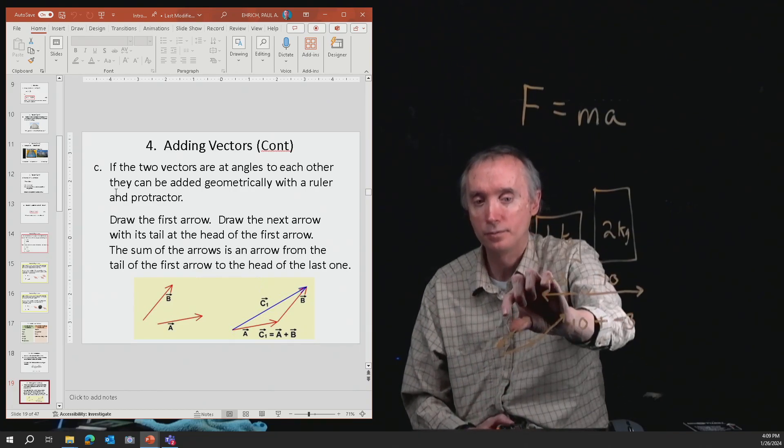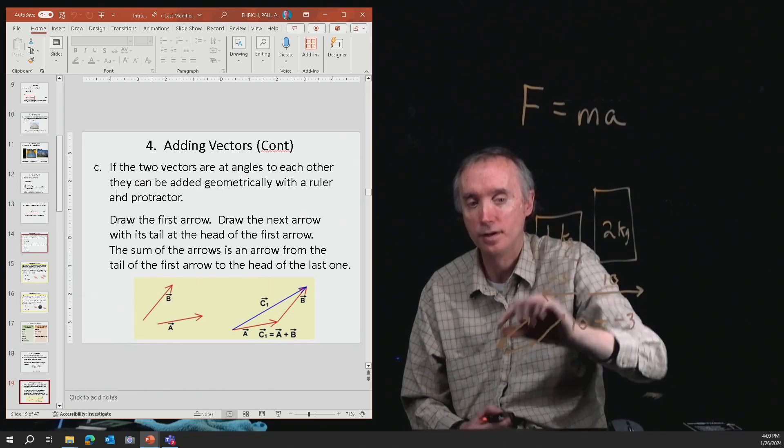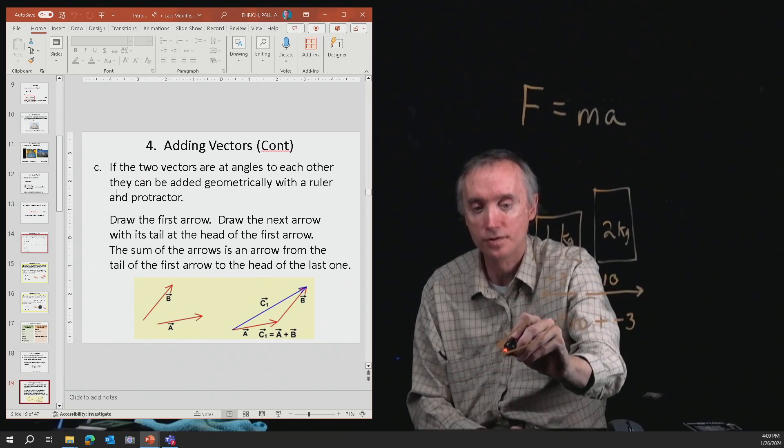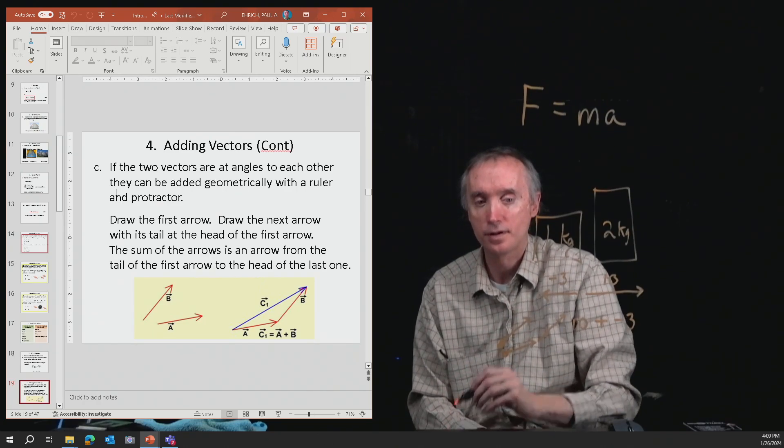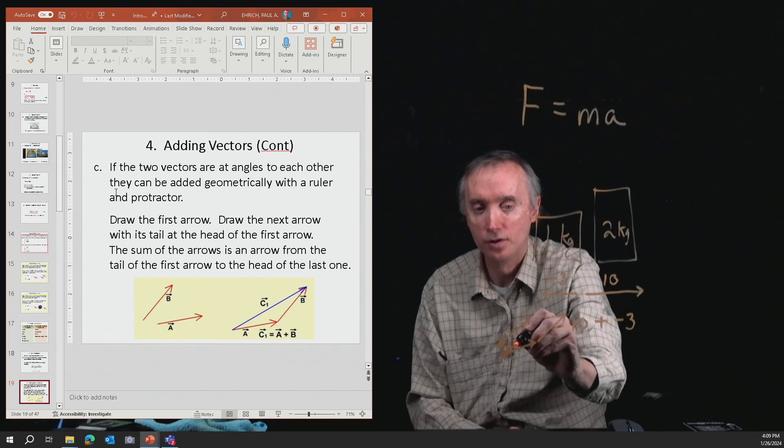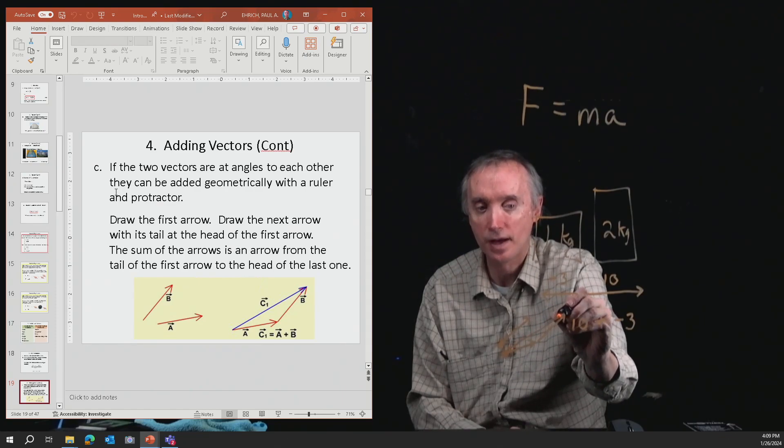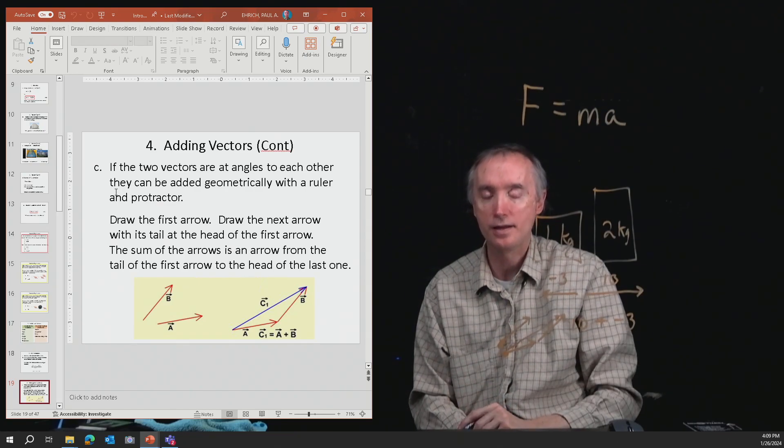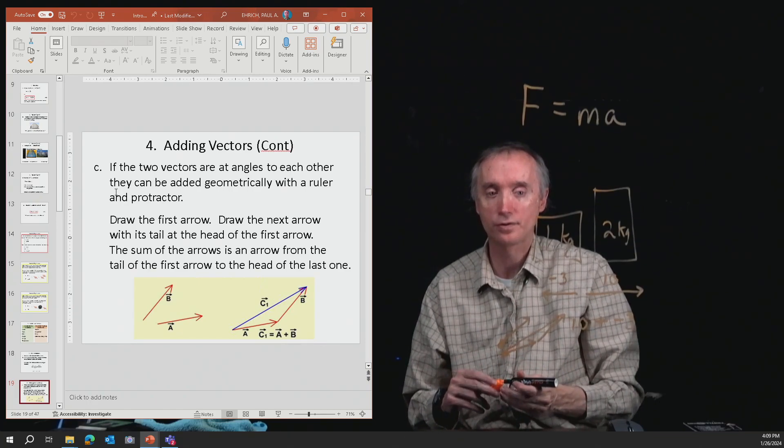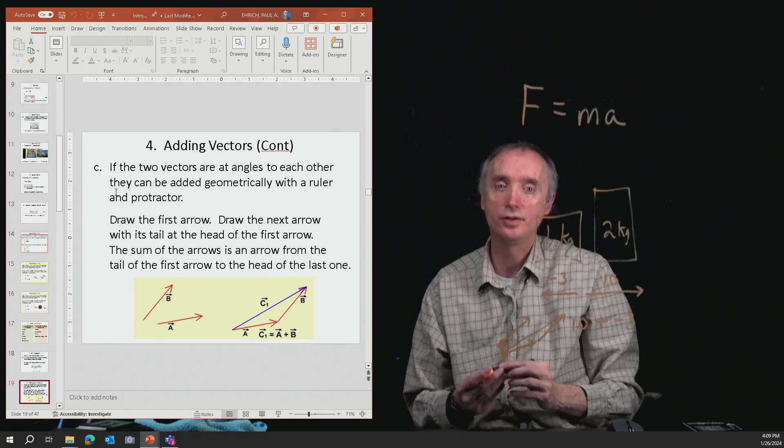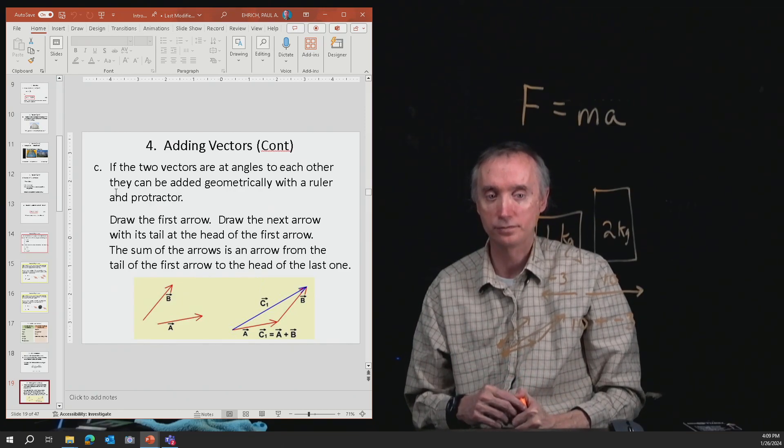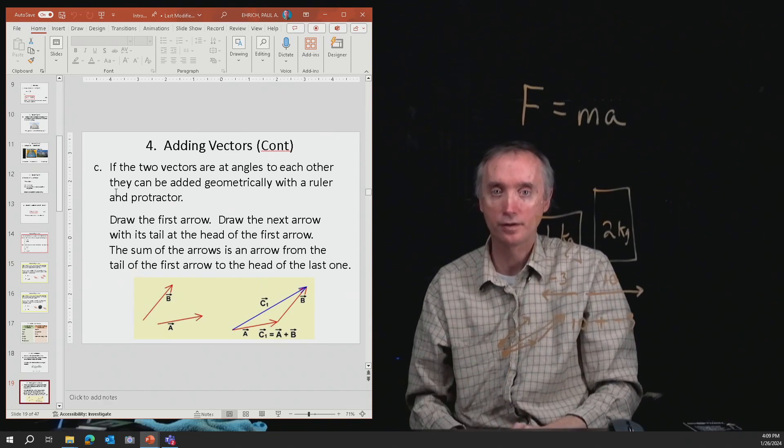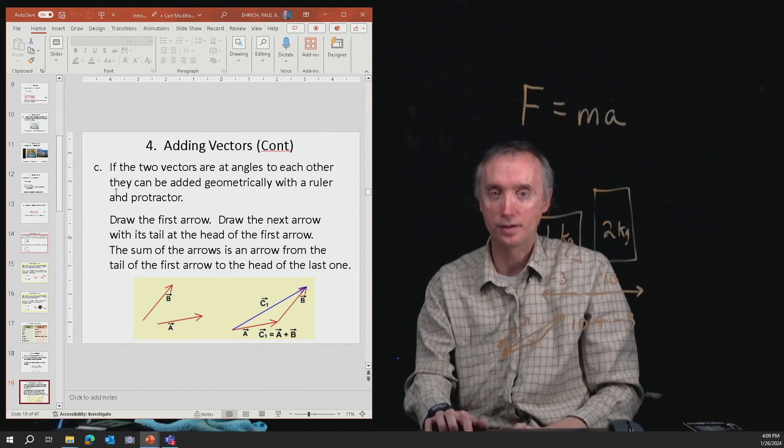But I can pick it up and put it over there. And then my final result is like a conga line. So where you start at, and then draw a line to where you end at, and that is the sum of those two vectors. Now, you can also do it using trigonometry, but we're not going to do that in here. So this is something I would like for you to be able to do on the exam.